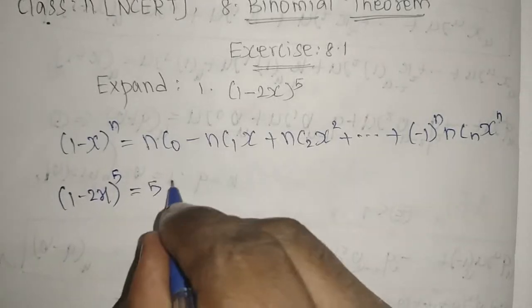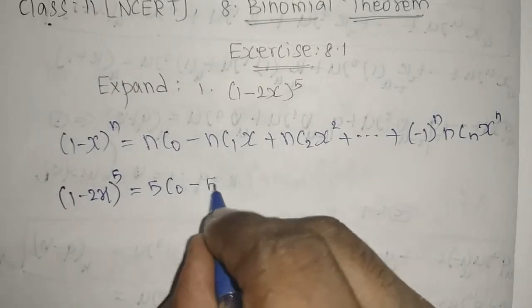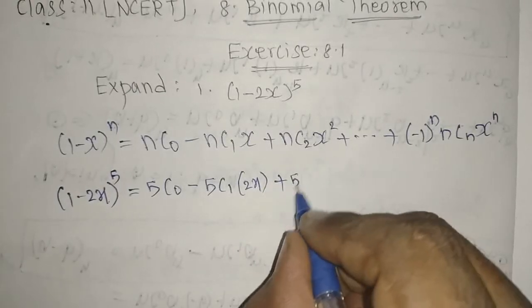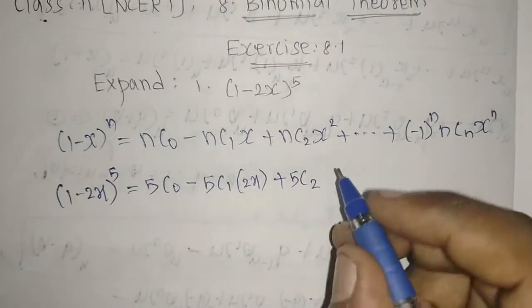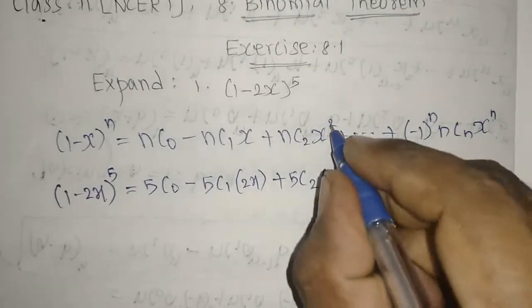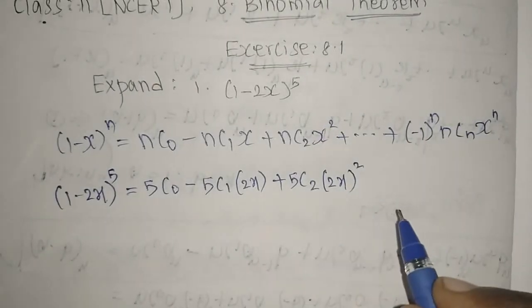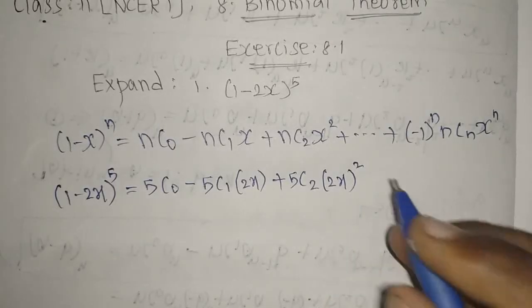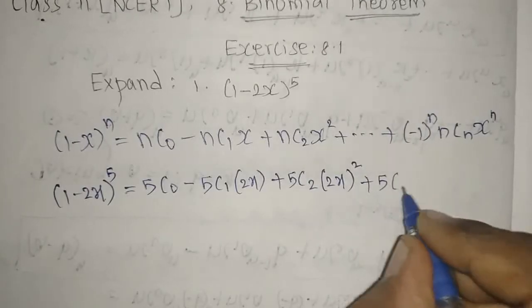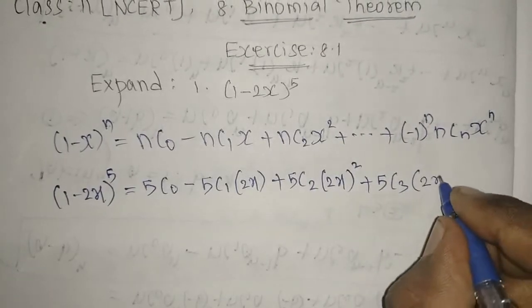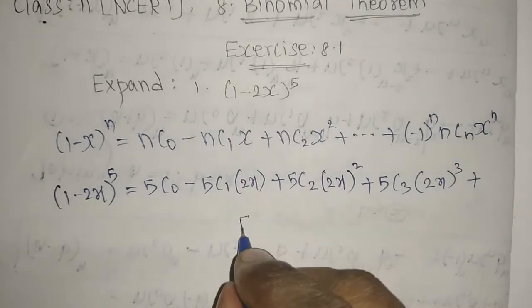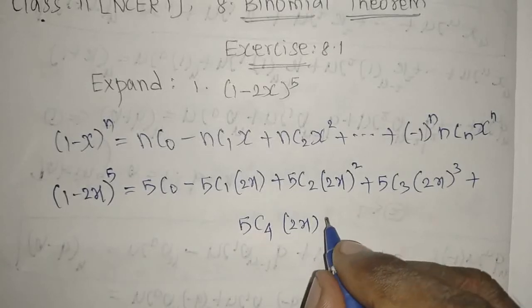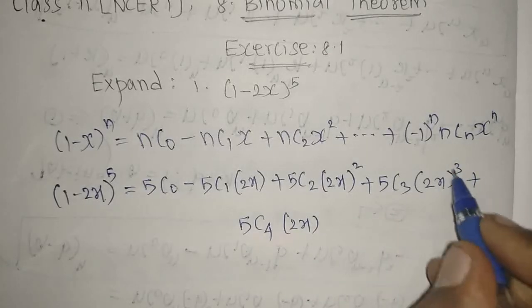Now expanding: 5C0 minus 5C1·(2x) plus 5C2·(2x)^2. We need to continue until we reach the 5th term. Next: minus 5C3·(2x)^3 plus 5C4·(2x)^4.